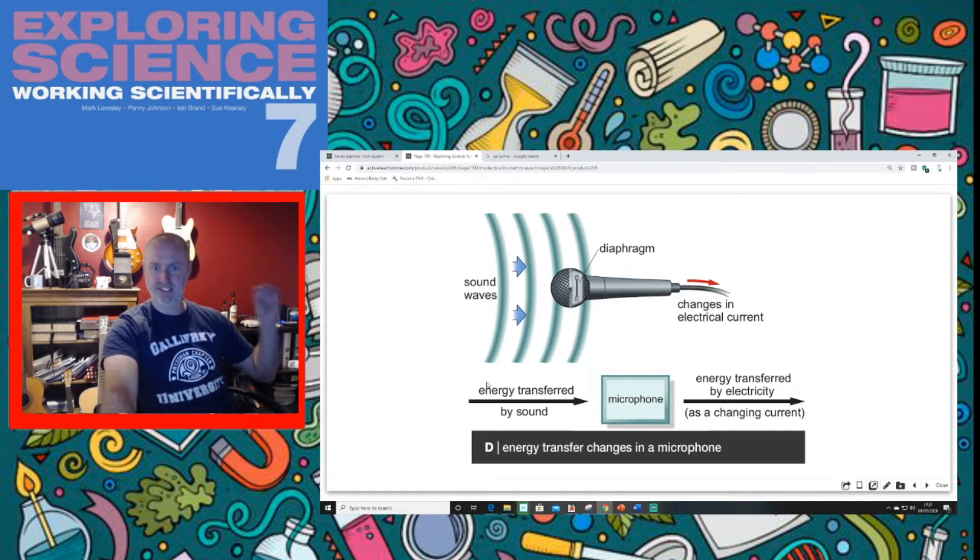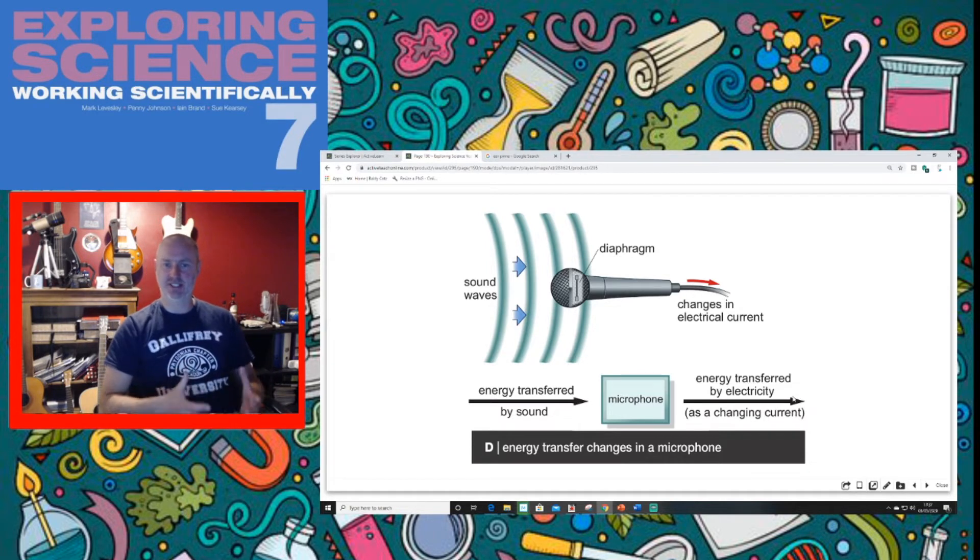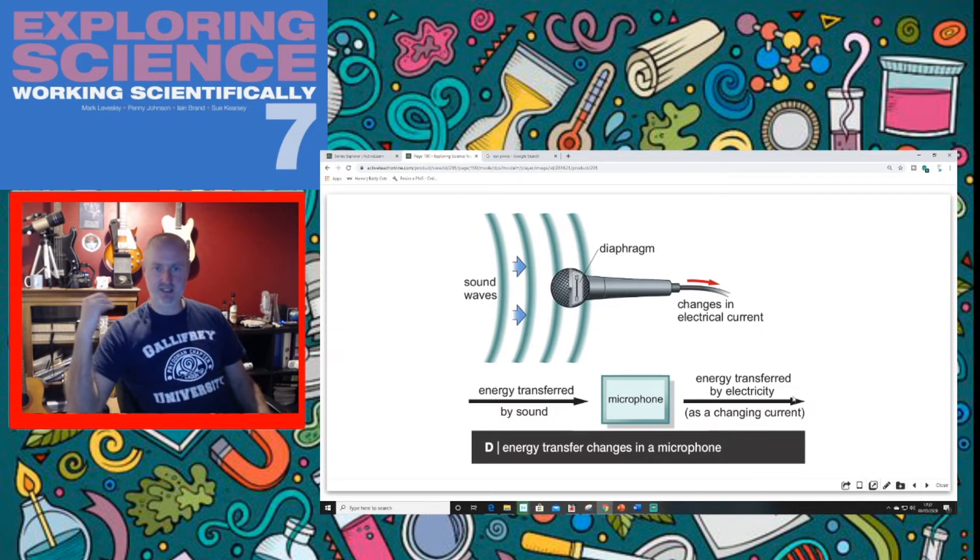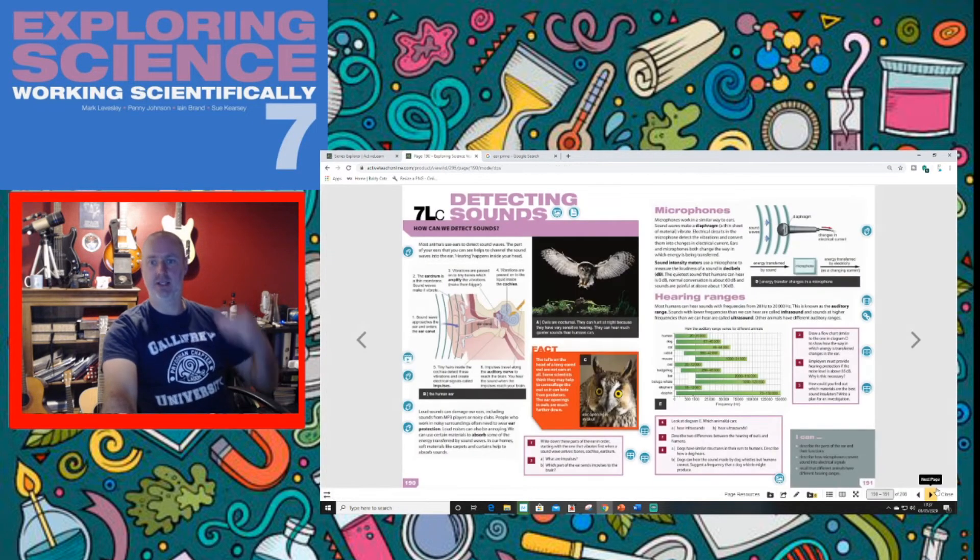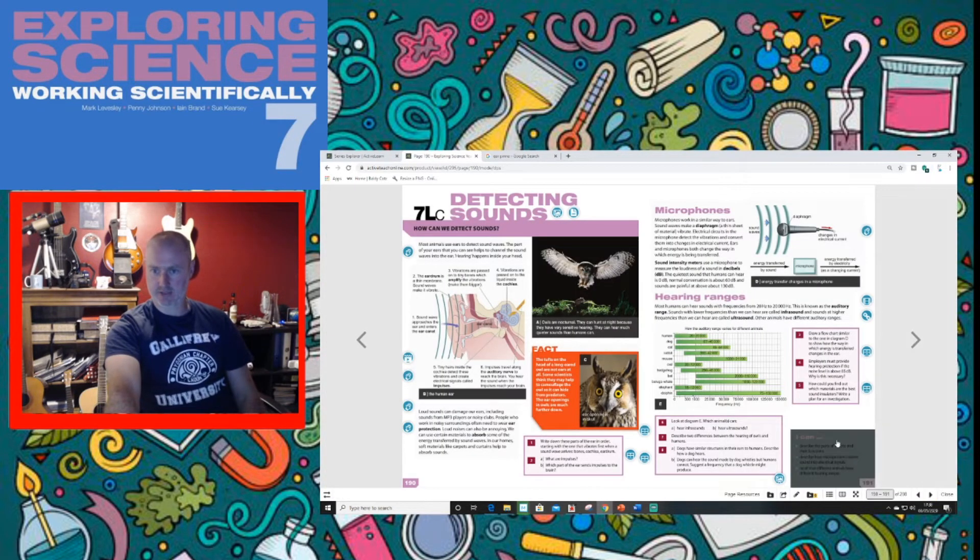We get the longitudinal wave, the sound energy entering into the ear, and then we have the electrical impulse leaving. So the energy changes are the same. In the human ear, it's sound energy or mechanical energy into electrical energy.